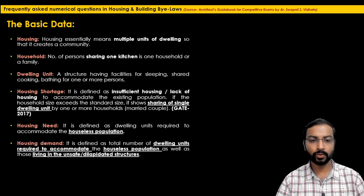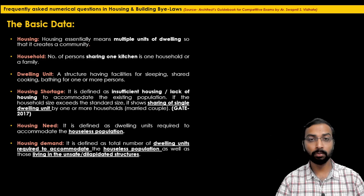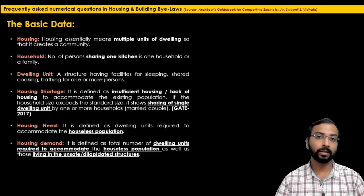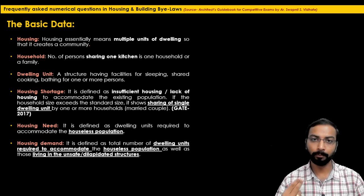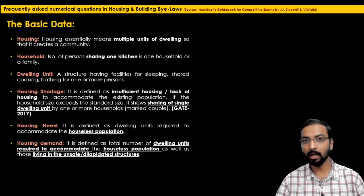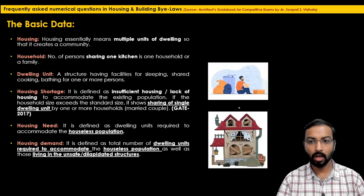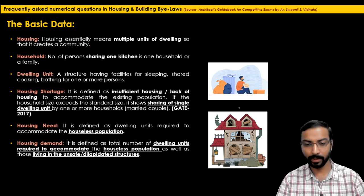Housing demand is defined as the dwelling units required to accommodate the houseless population plus one more term: the houses which are unsafe for living or in dilapidated condition. So housing demand equals houseless population plus the population living in unsafe or dilapidated houses.